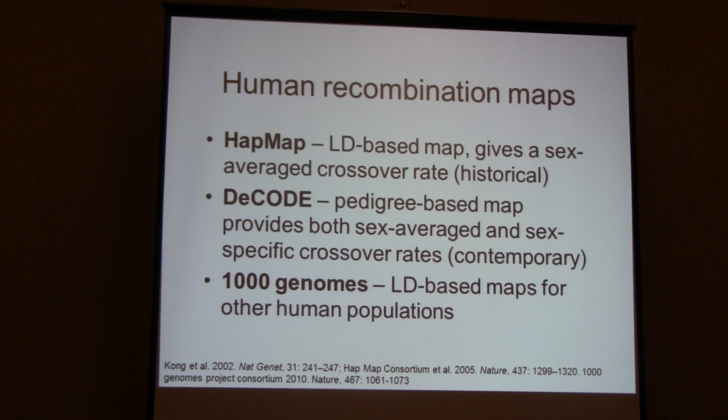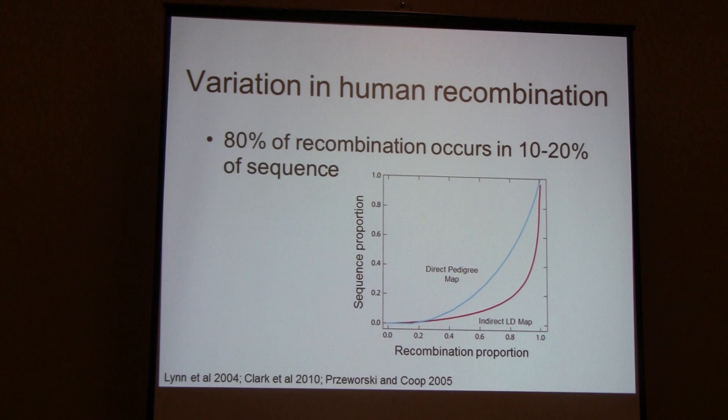More recent studies have given us a picture of other human populations besides Europeans, including the 1000 Genomes LD-based maps of recombination. One key finding is that recombination tends to be concentrated in hotspots — it is not evenly distributed across the genome. Specifically, about 80% of recombination tends to occur in only about 10 to 20% of the sequence.